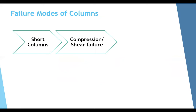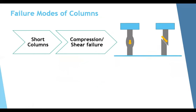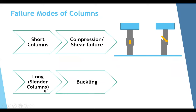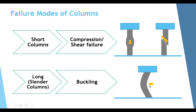Failure modes of columns depend on whether the column is short or slender. Short columns typically fail by compression or shear — a compression failure looks like crushing, while a shear failure shows an inclined crack. Slender or long columns, however, fail mainly by buckling under the compression force, not by compression or shear as with short columns.